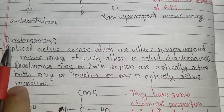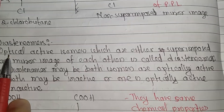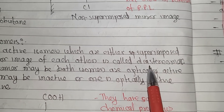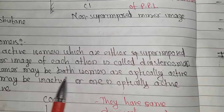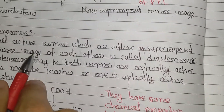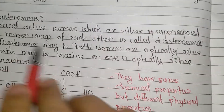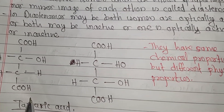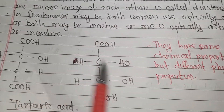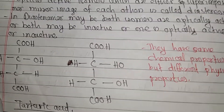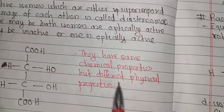The next topic is diastereomers. Optical active isomers which are neither superimposable nor mirror images of each other are called diastereomers. In diastereomers, both isomers may be optically active, or both may be inactive, or one is optically active and the other inactive. They have the same chemical properties but different physical properties.